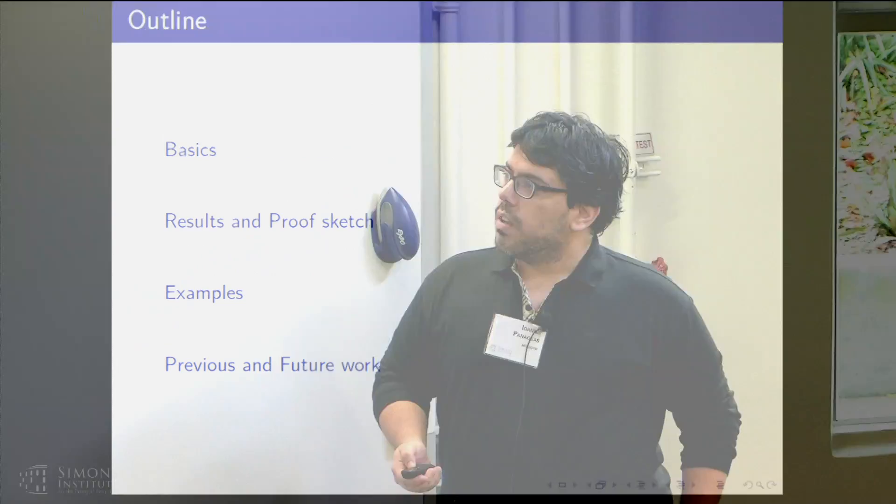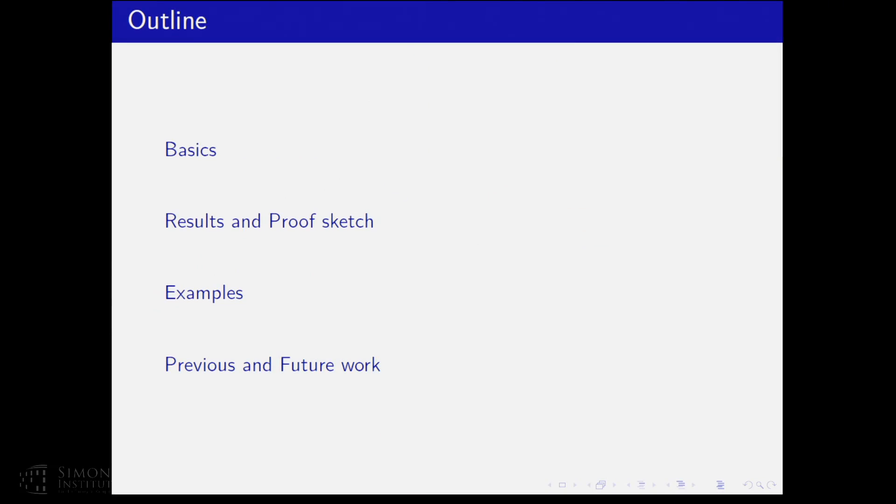Today, I'm going to talk about gradient descent, and we will see how techniques from dynamical systems can be useful to analyze the average behavior of gradient descent and in general, prove theorems in optimization. So the outline: I'll give you some basic definitions, then I'll talk about our main result in some proof sketch, give some examples and talk about previous and future work.